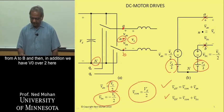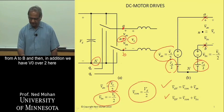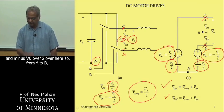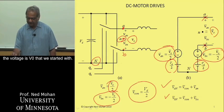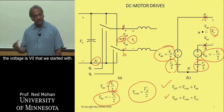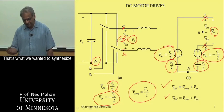And then, in addition, we have V0 over 2 here and minus V0 over 2 here. So from A to B, the voltage is V0 that we started with. That's what we wanted to synthesize.